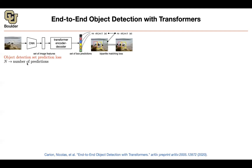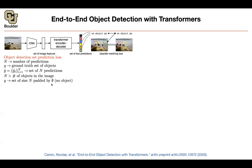This architecture is going to output a fixed number of predictions N, which is big enough to detect almost all objects in any image. In each image there is only going to be a handful of objects, so you are being wasteful a little bit. You are going to have an empty or zero notation corresponding to no object. Whenever you have only two predictions, you label the rest of them as empty or no object. You are always outputting more predictions than there is actual ground truth.